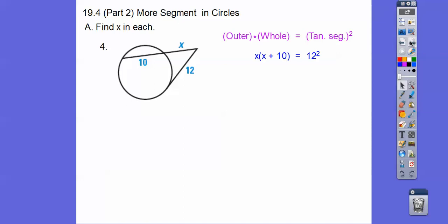Outer times whole equals tangent segment squared. Since x is on this secant segment right here, then I did outer times whole on the left. So distribute, and then now we have a quadratic equation. Quadratic equations, we want them to equal 0 so we can factor that.